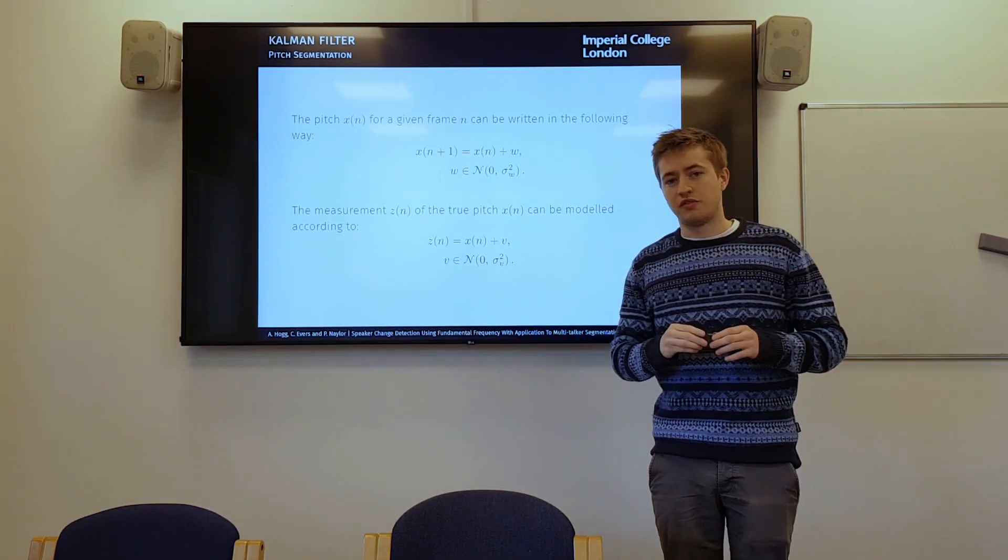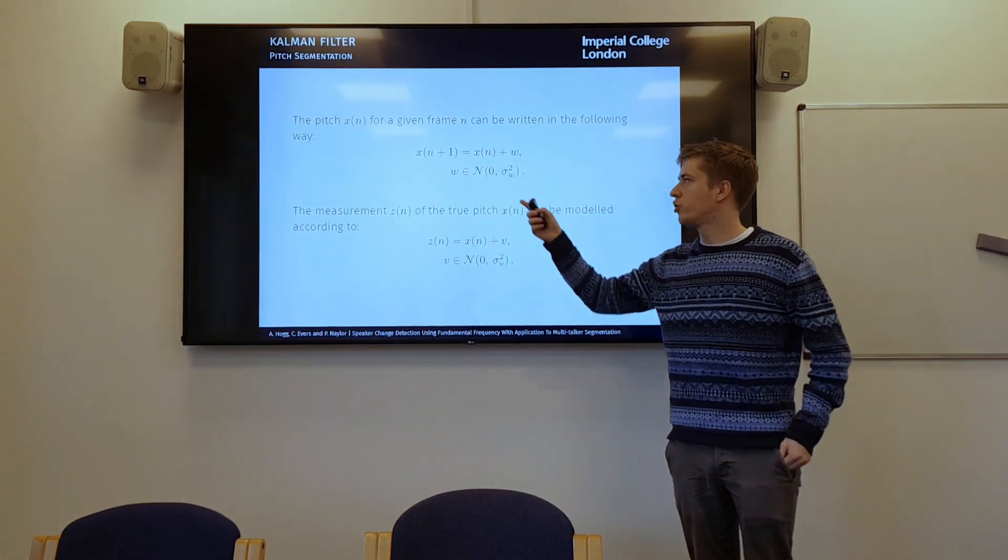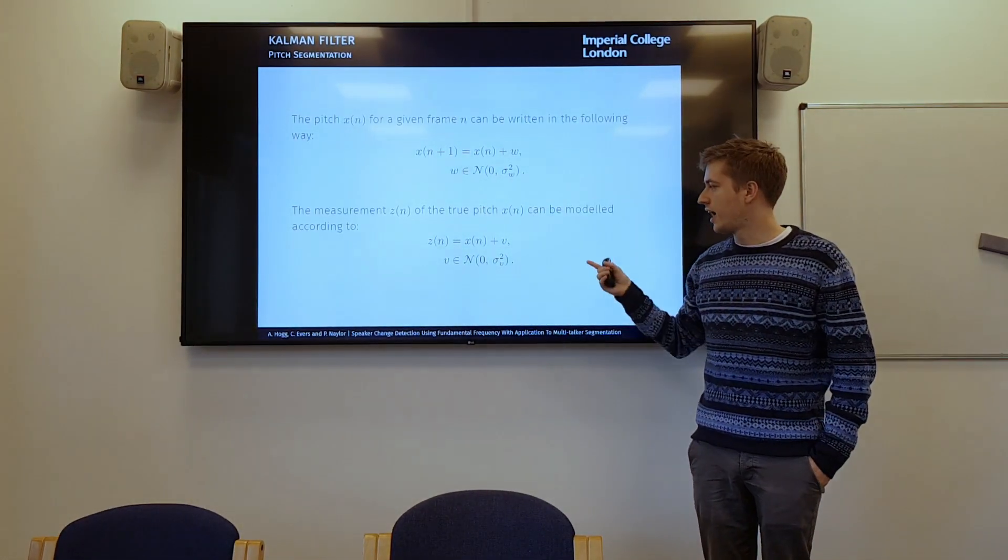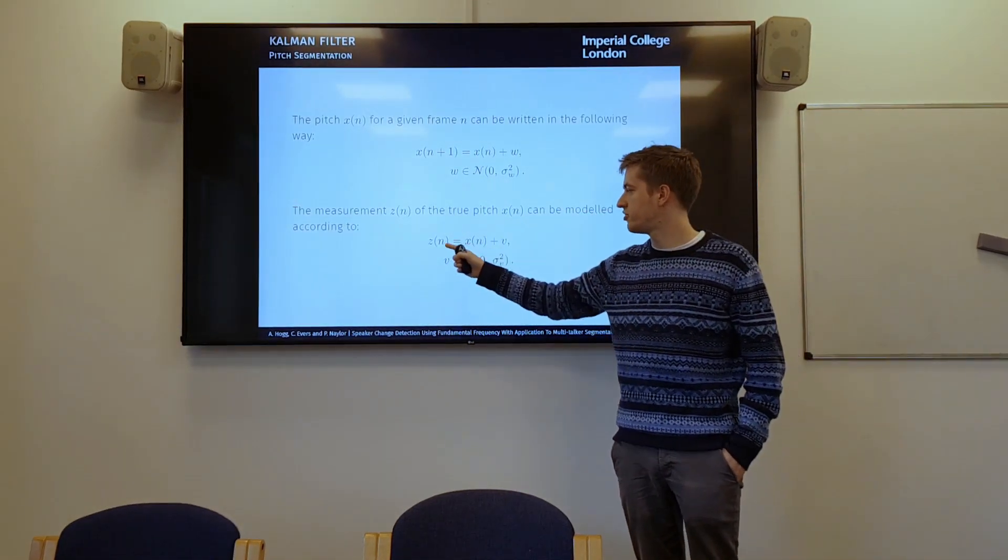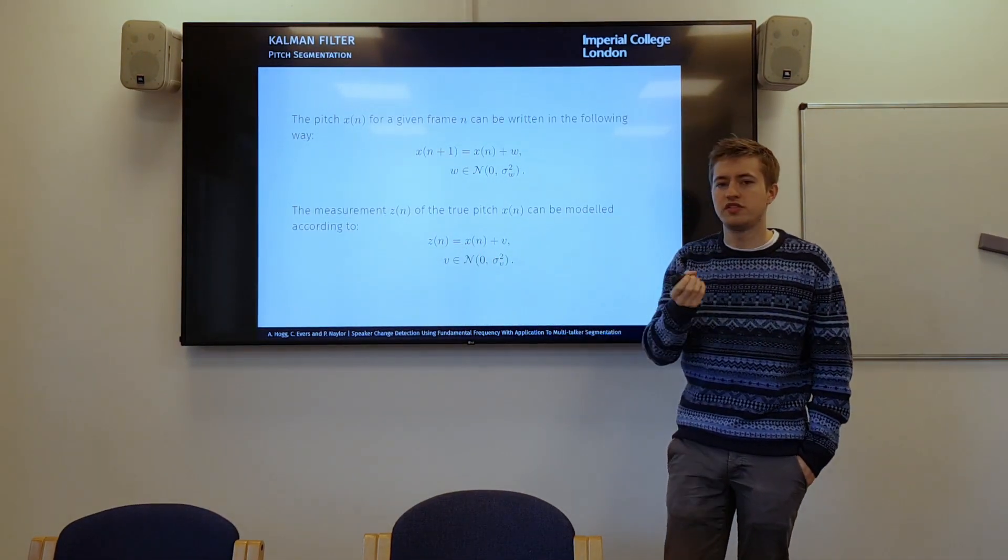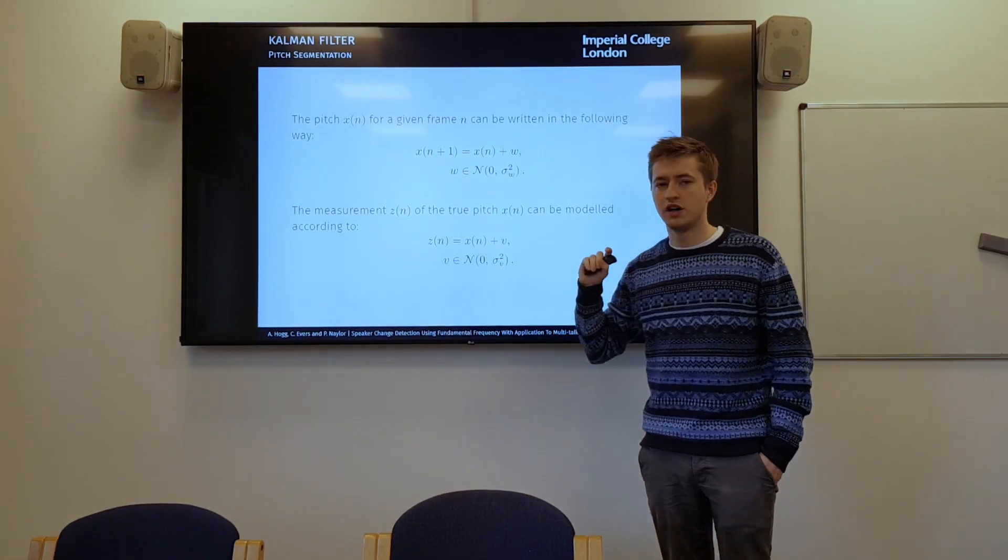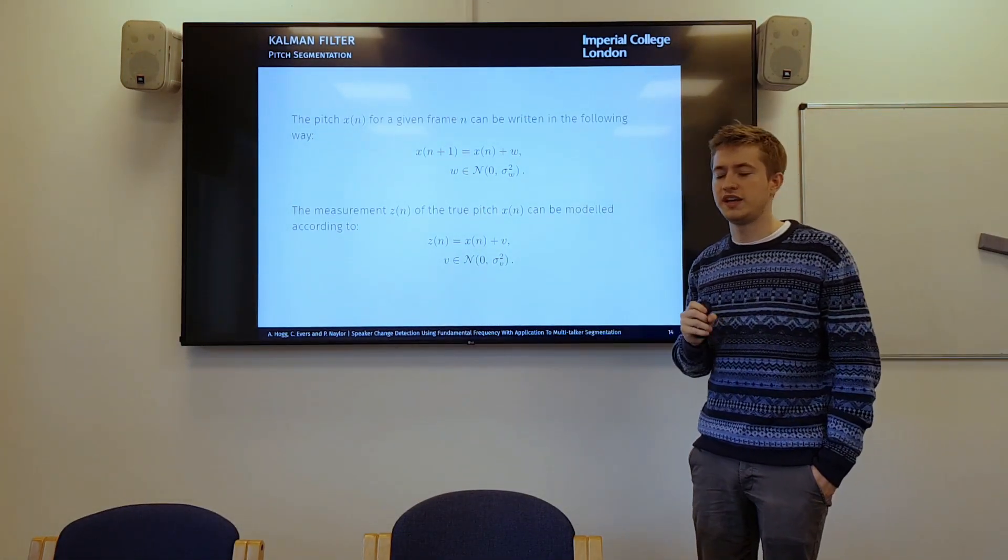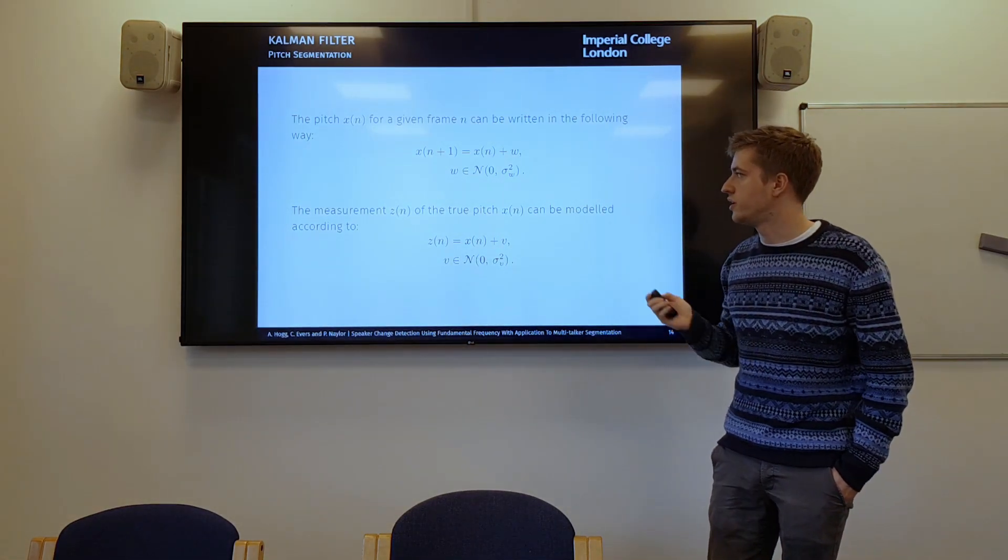So, first we need to have a model, a way of modelling our pitch. And we do that just by a random walk, which is the top equation here. And then we also need to model our observations. So our observations are Z, and obviously our pitch estimation algorithm is not going to be accurate, so we add some noise in to the model to account for those inaccuracies in the estimation. So that's what those two equations are.